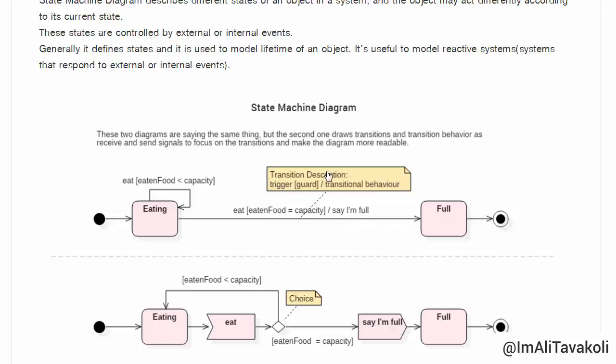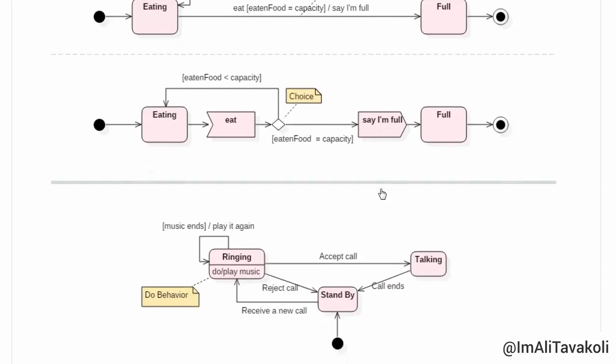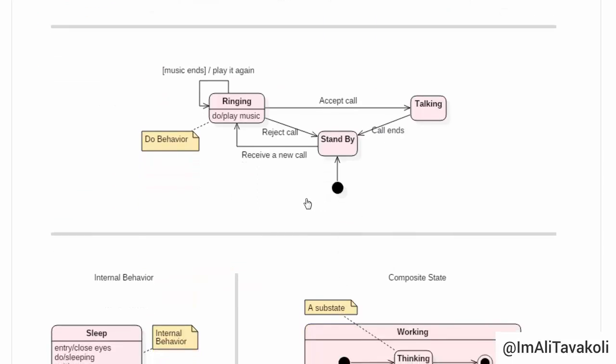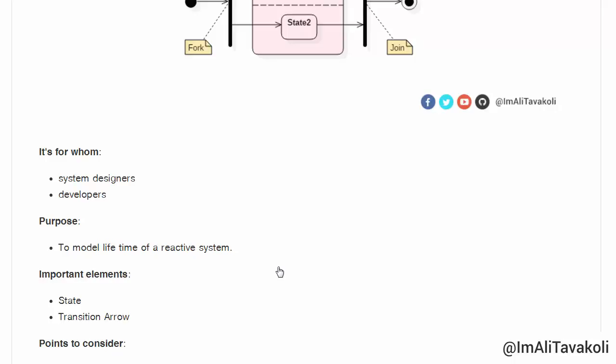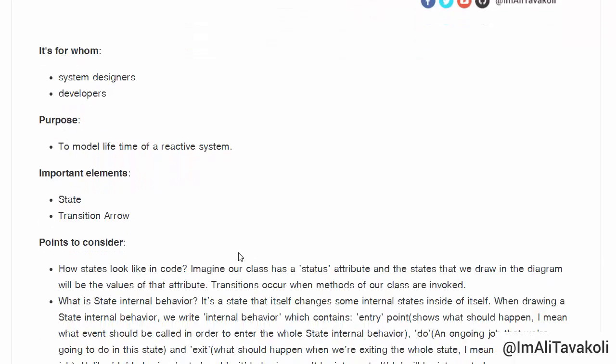And the transition description itself contains different parts such as trigger, guard condition, and transitional behavior. We will get up here and I will explain all of these examples in more detail later. We also have some terms such as internal behavior state or composite state. So, but first,